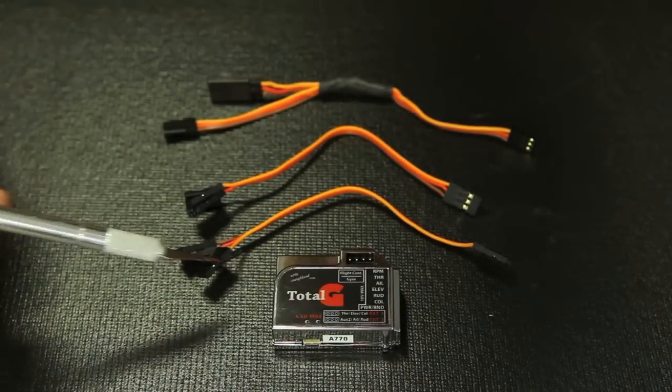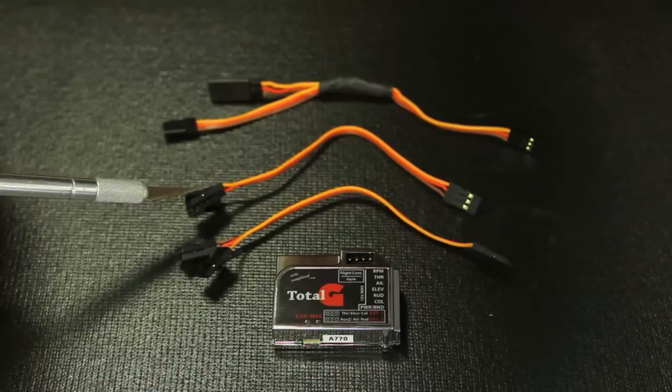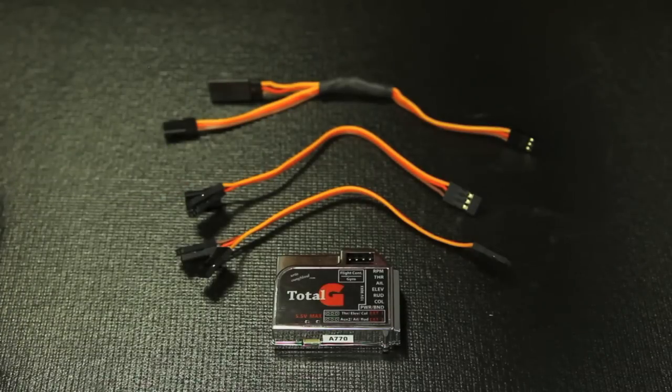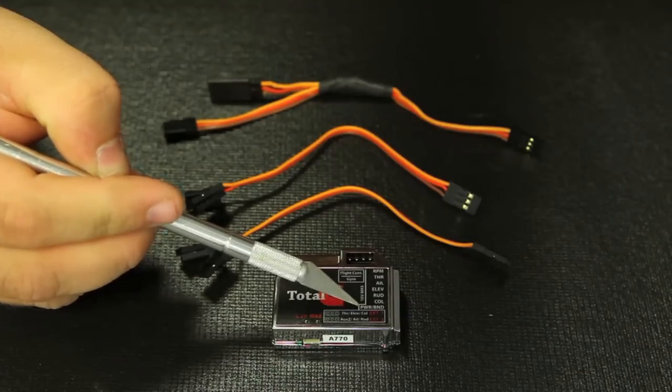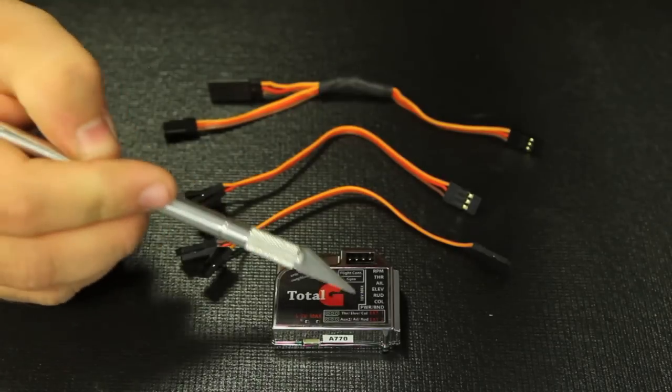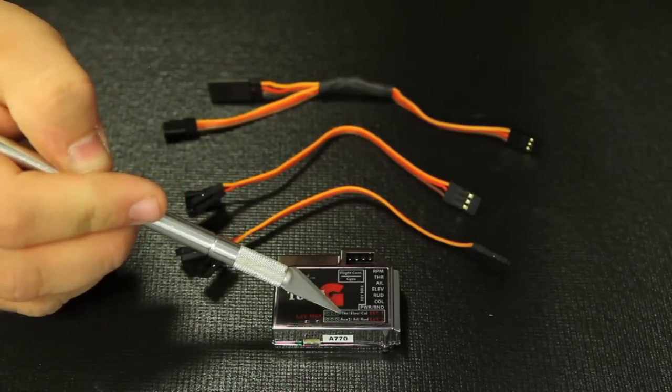What you're going to do with the other three signal type wires, these are going into your external receiver such as your Futaba receiver. Extension one, you're going to plug it into the collective, elevator, and throttle channel. External two is going to go to rudder, aileron, and aux two.